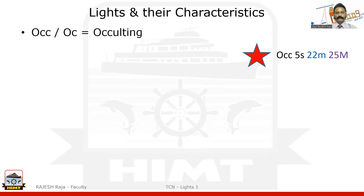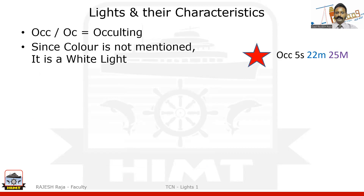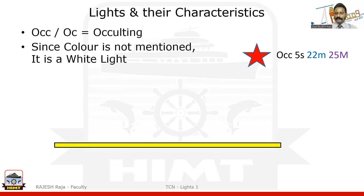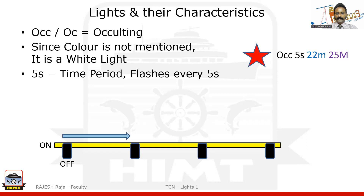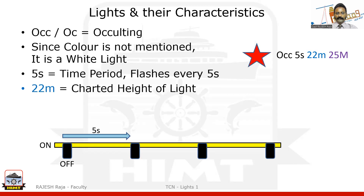The second example: OCC or OC stands for occulting. Color is not mentioned, so I assume it is white. The light is constantly on, and for a short while it goes off — shown by the black spikes. Five seconds is the time period, measured from the start of the first occultation to the start of the second. 22 meters is the charted height, and 25M is the nominal range.